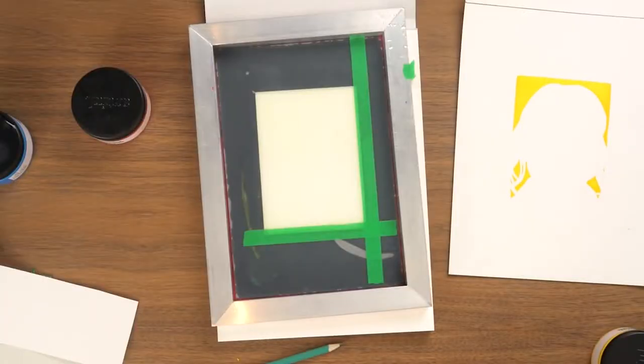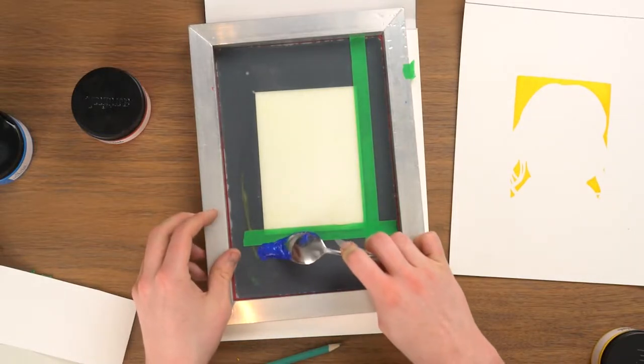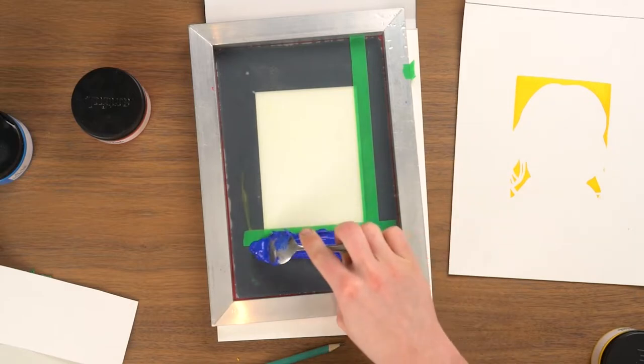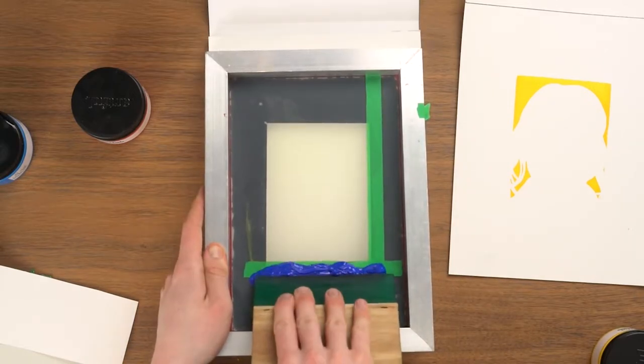On to layer two. I'm using a dark blue, this time to fill in the stencil of Billie's hair. Using a spoon, I'm putting a large amount of the dark blue at the bottom of my printing area and then using my squeegee again to flood the screen.